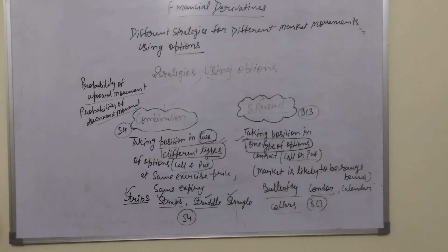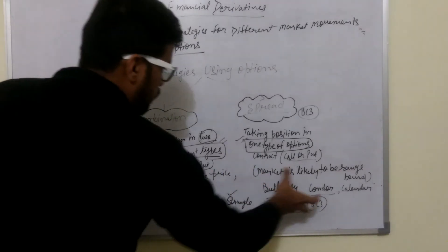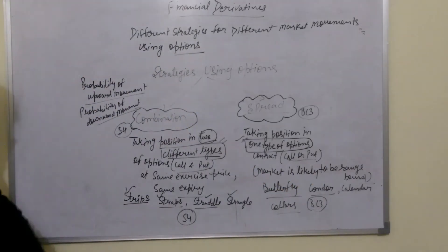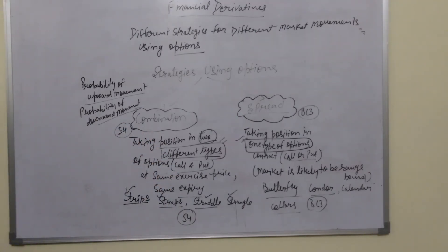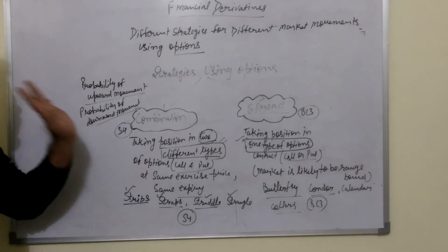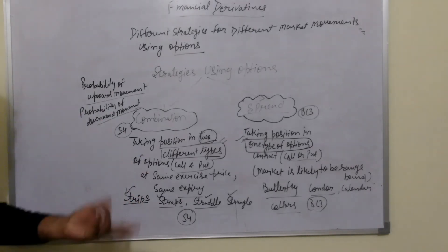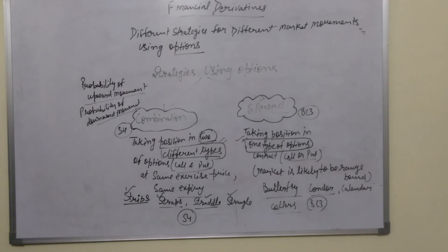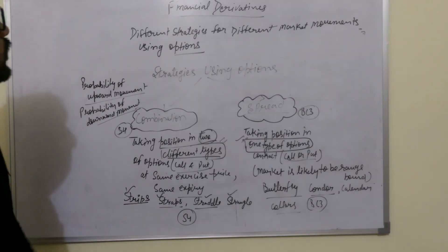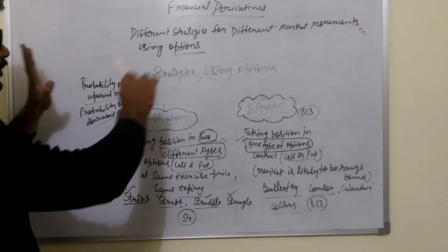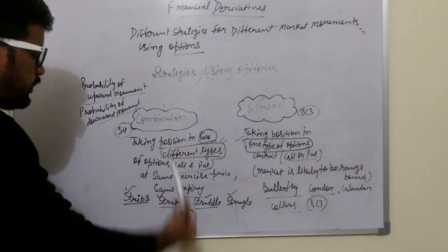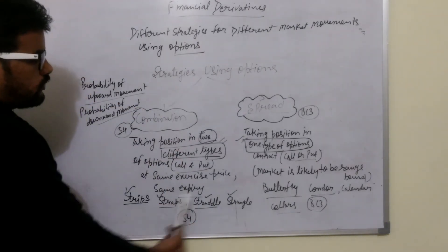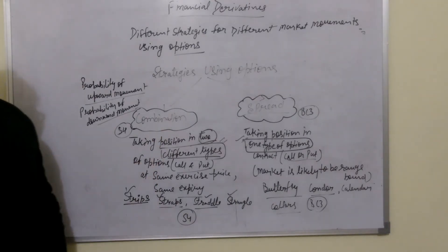So to recap: S4 refers to the four combination strategies — Strips, Straps, Straddle, and Strangle — used when one direction of market movement has a higher probability. BC3 refers to the four spread strategies — Butterfly, Condor, Calendar, and Collars — used when the market is range-bound. We will now go into the details of each of these strategies.